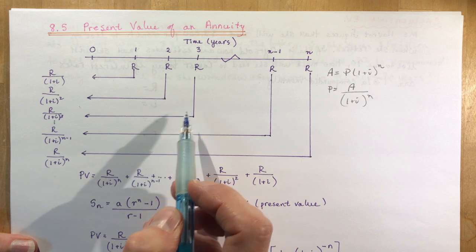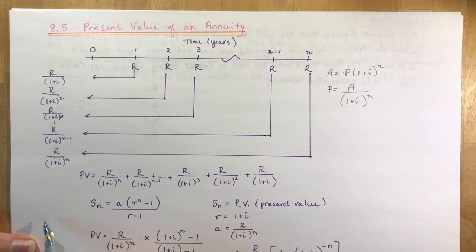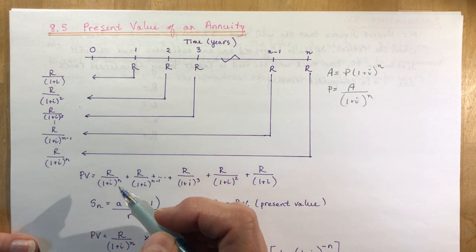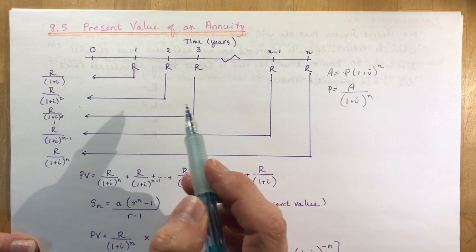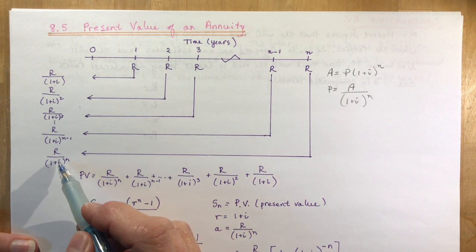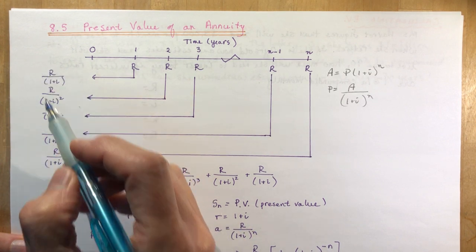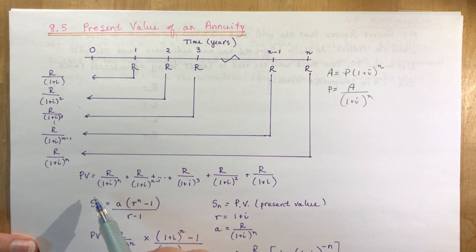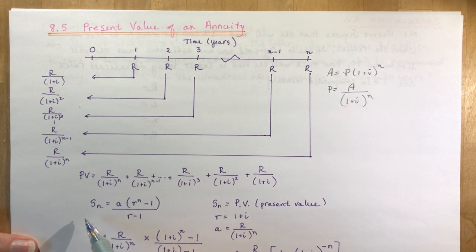My A is my regular payment, 1 plus i to the n, so here would be to the power of 1, power of 2, power of 3, all the way down to the power of n. The textbook does this formula a little bit differently. This way is much easier to understand if you do the sum of these payments in reverse.